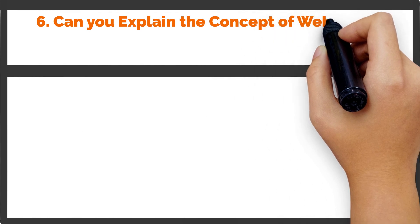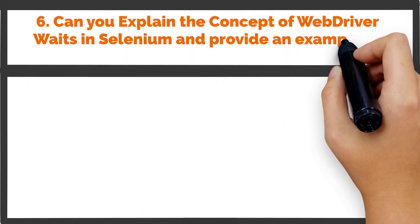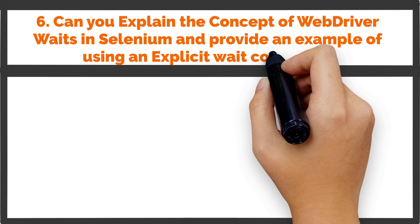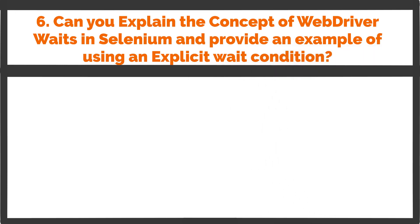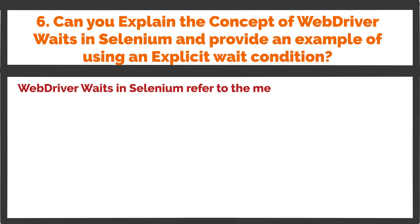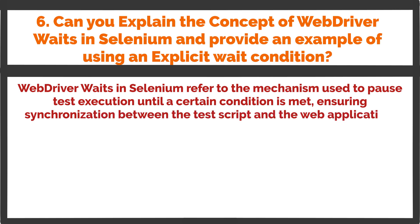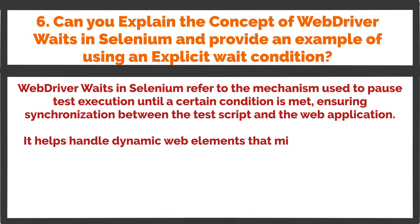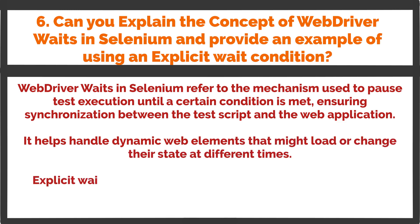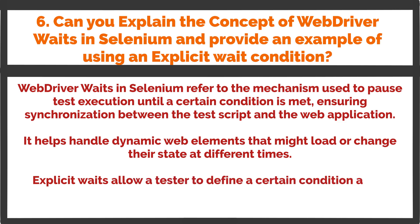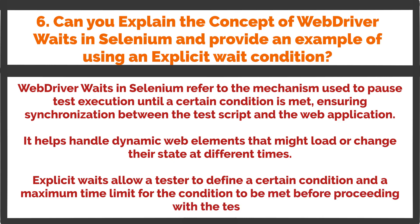Question 6: Can you explain the concept of WebDriver waits in Selenium and provide an example of using an explicit wait condition? WebDriver waits in Selenium refer to the mechanism used to pause test execution until a certain condition is met, ensuring synchronization between the test script and the web application. It helps handle dynamic web elements that might load or change their state at different times. Explicit waits allow a tester to define a certain condition and a maximum time limit for the condition to be met before proceeding with the test.